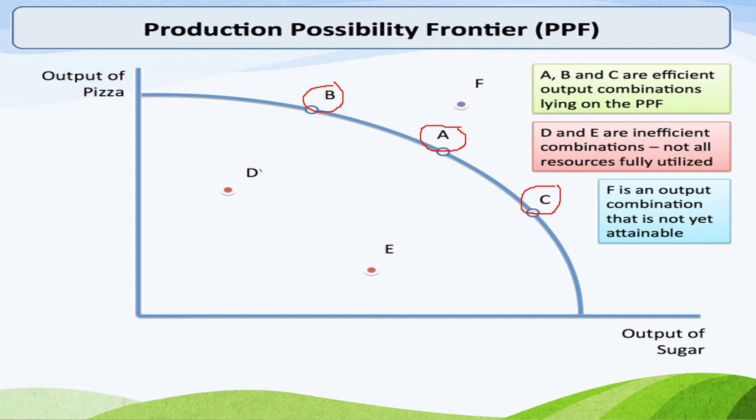Points D and E are inefficient combinations which means that all resources are not fully used. And finally, point F is an output combination that is not yet attainable.